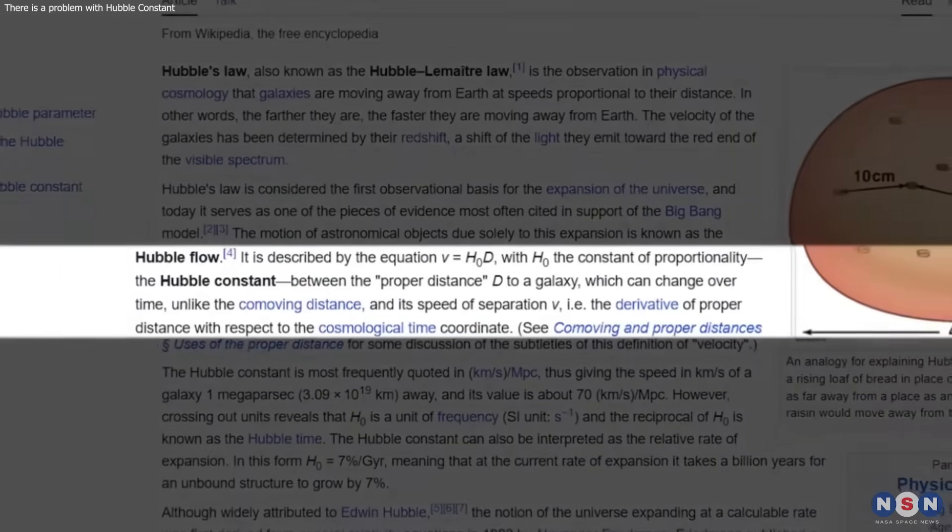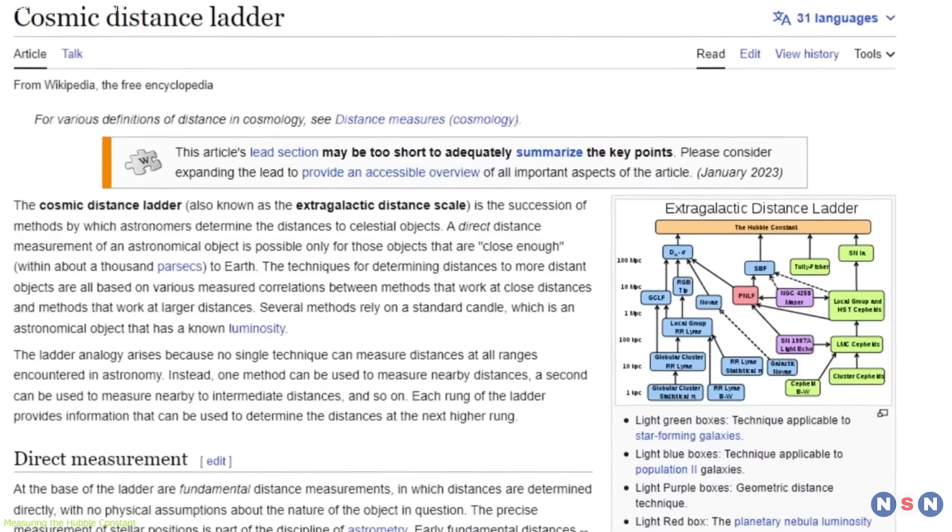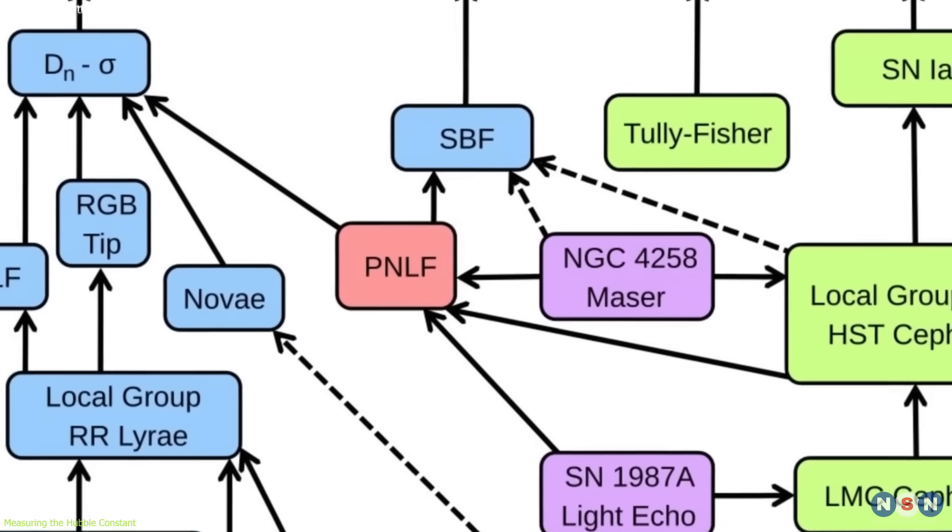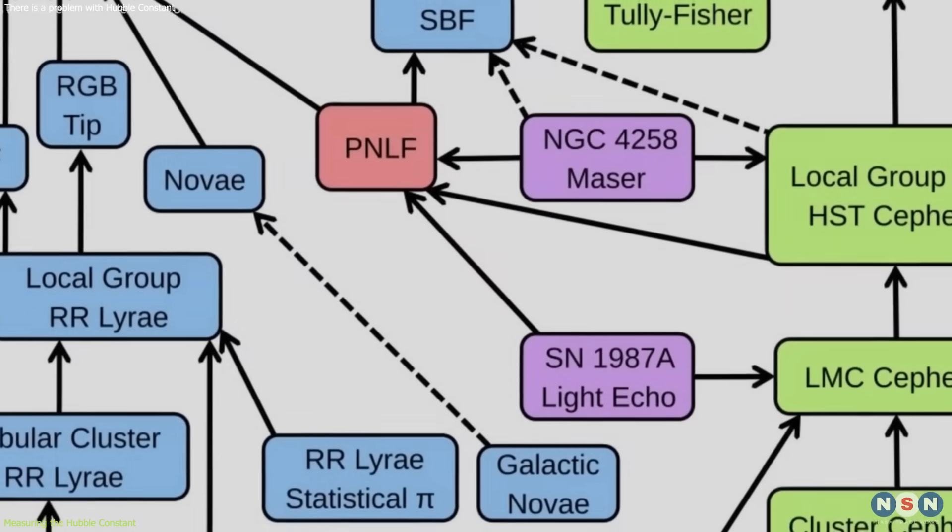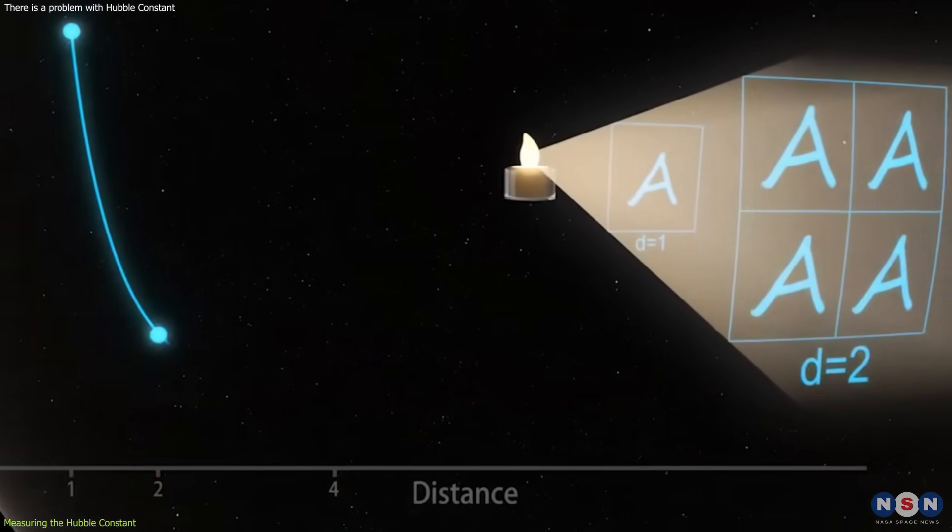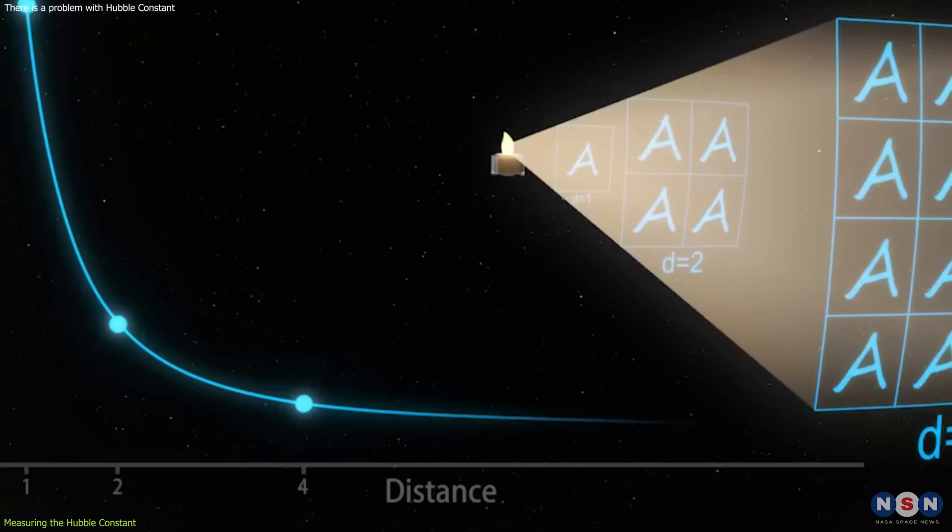How do we measure the Hubble Constant? One of the methods is to use the distance ladder, which is a series of steps that allow us to measure the distances to objects in the universe. The first step is to use objects that have a known brightness, called standard candles, to calibrate the distance ladder.